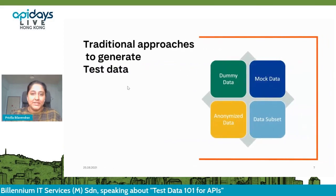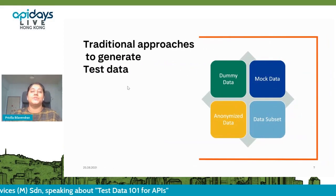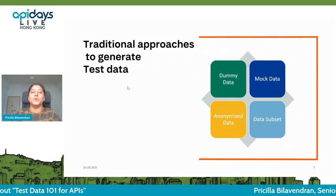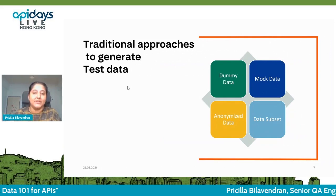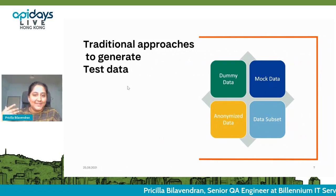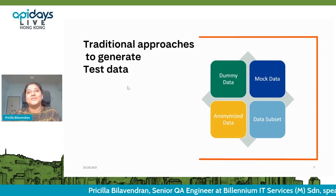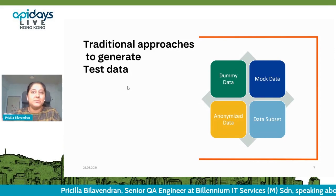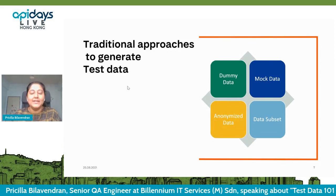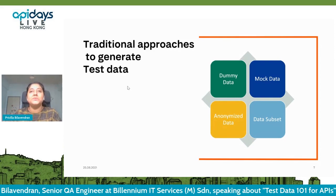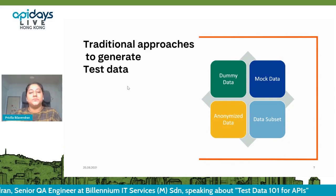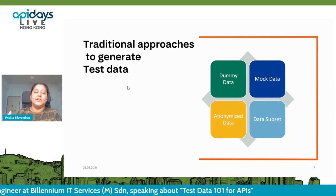Talking about the traditional approaches — these are the traditional approaches we used to create test data. How we do it: it's like dummy test data, where it's going to be AA, B, B, C, C — it's all going to be dummy test data. And sometimes we'll be just mocking the test data, like whatever explicit data we want to have.